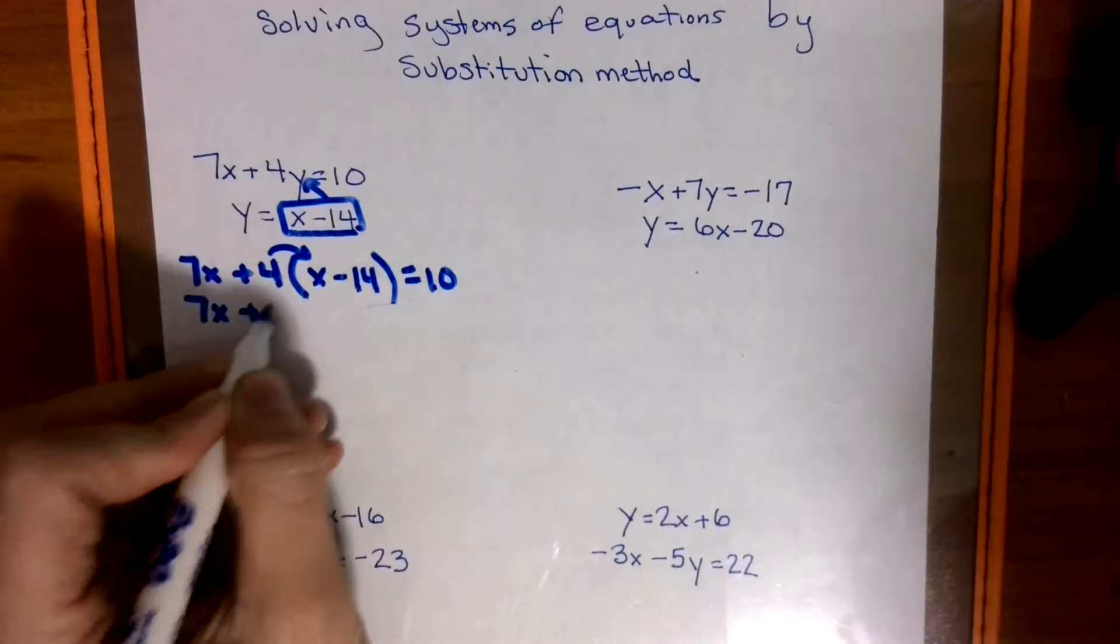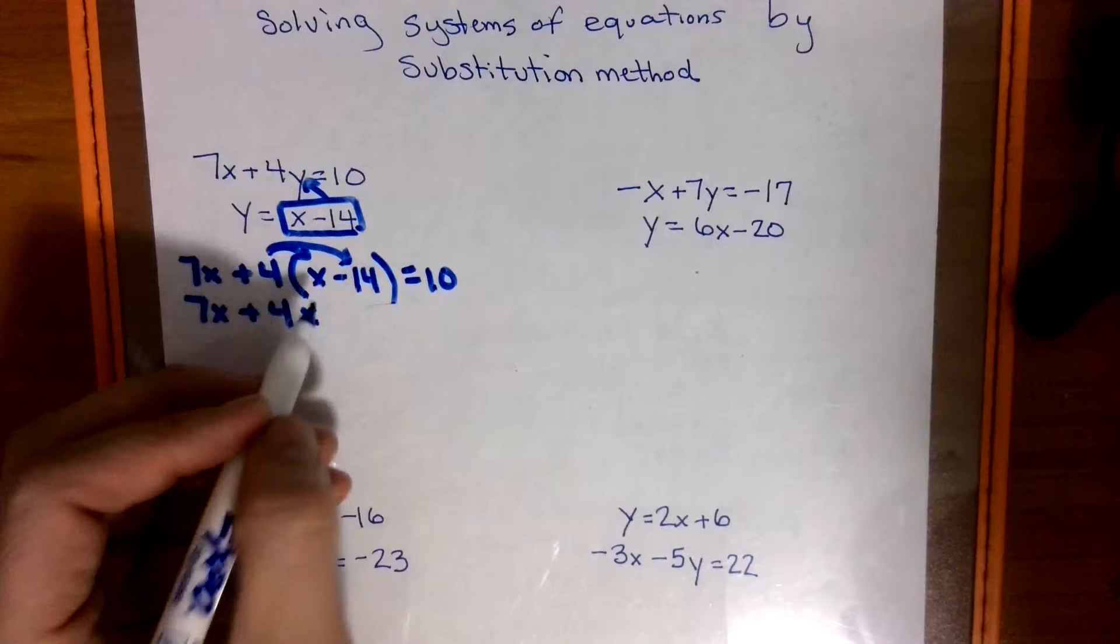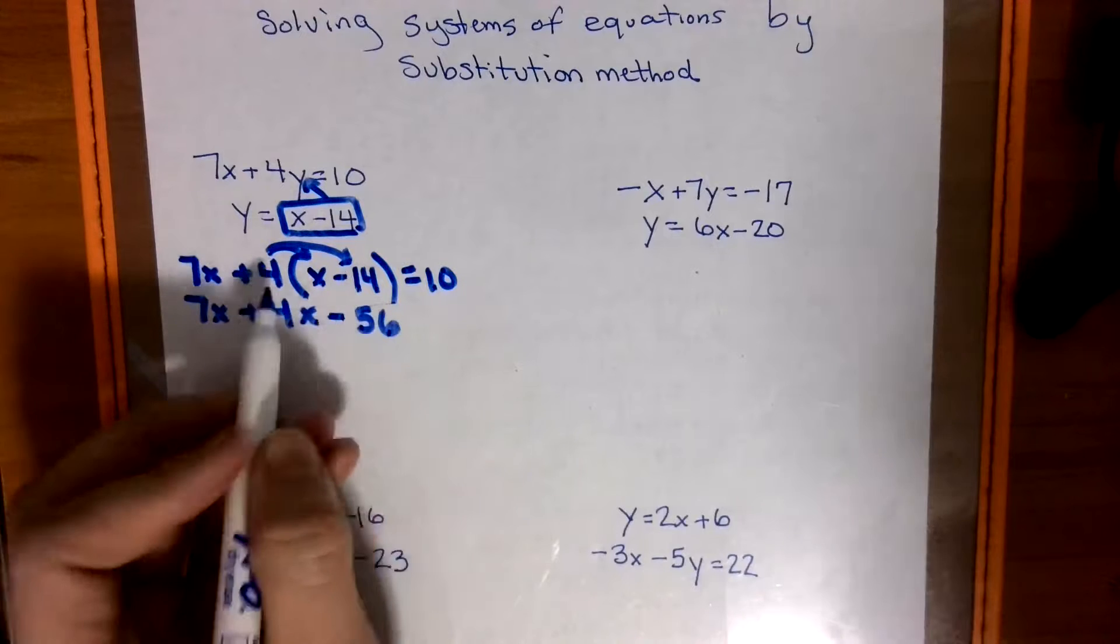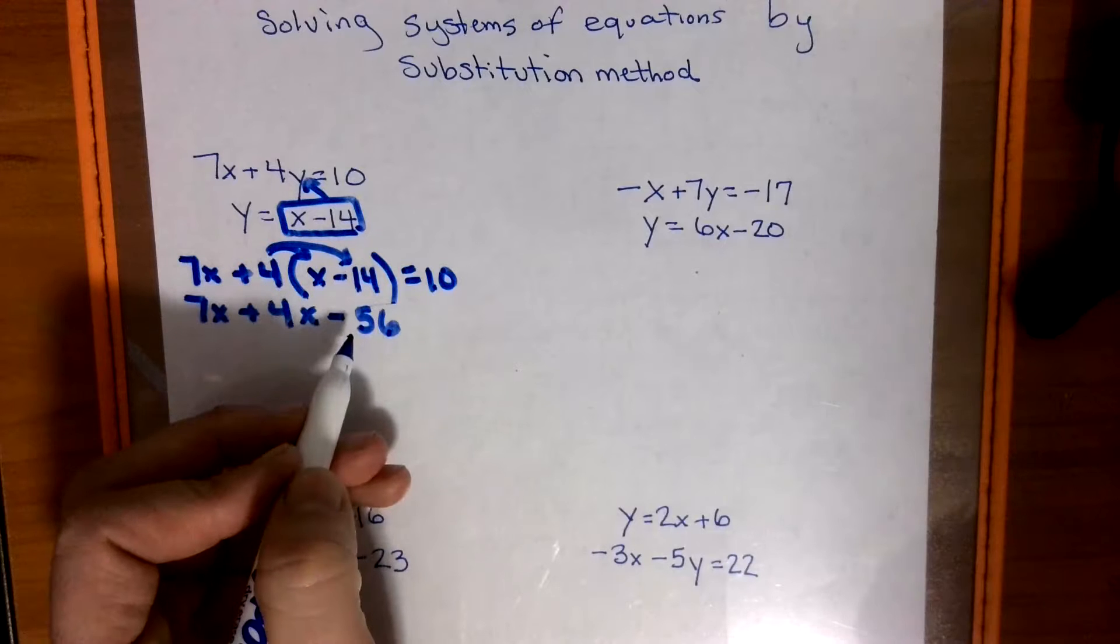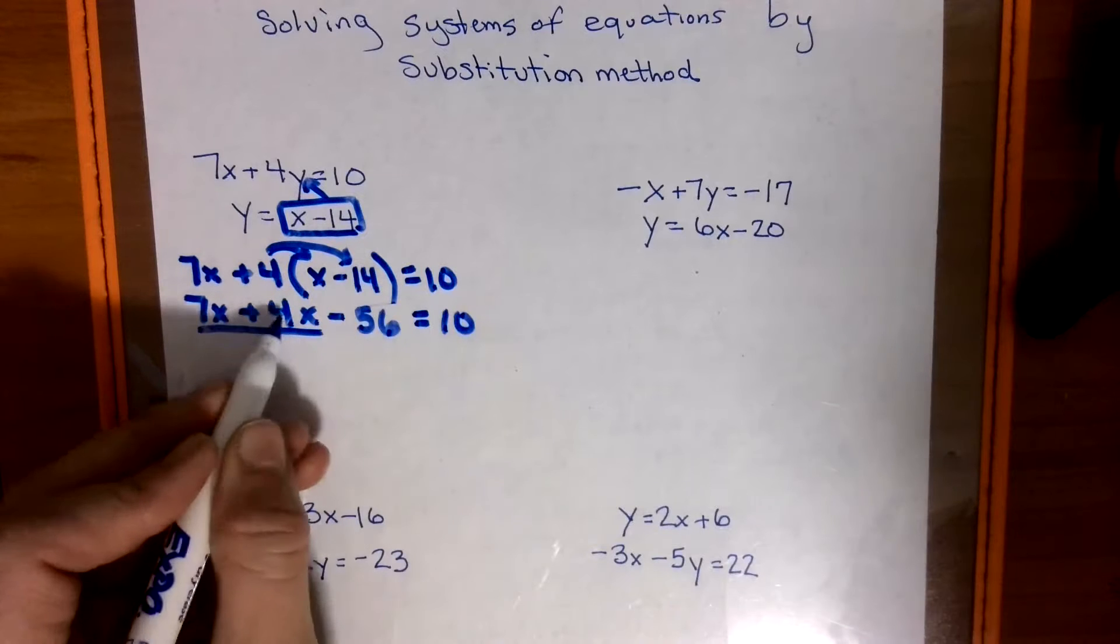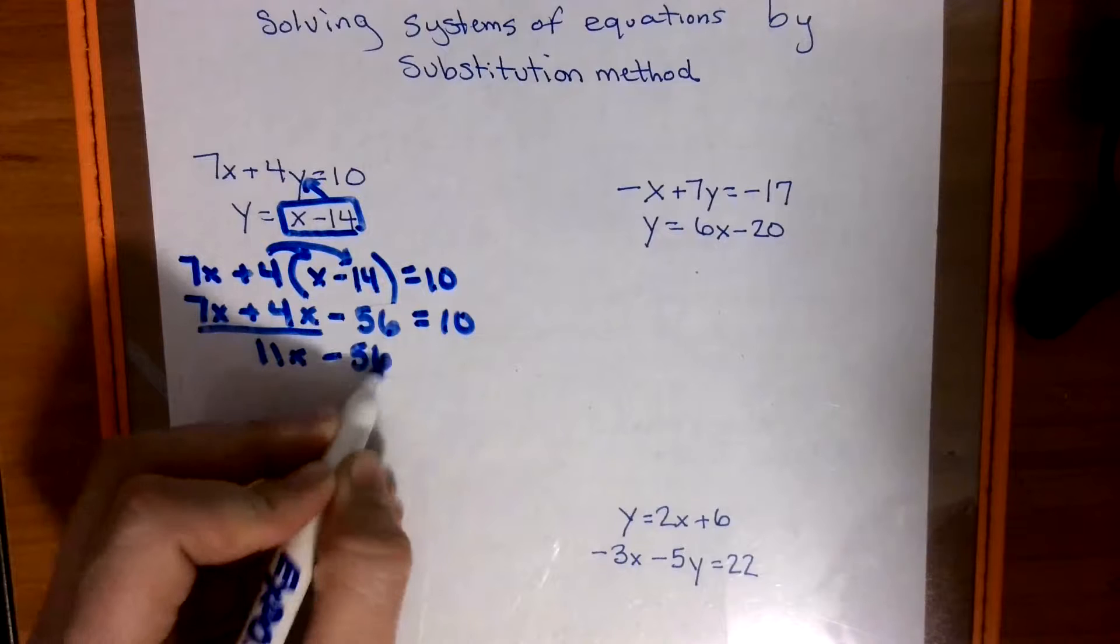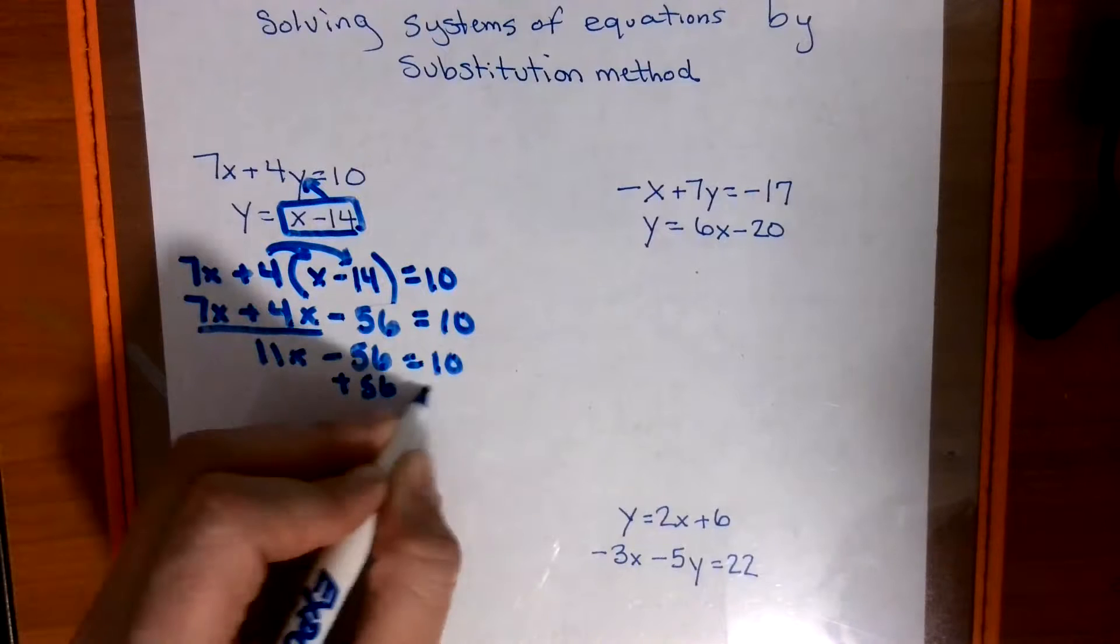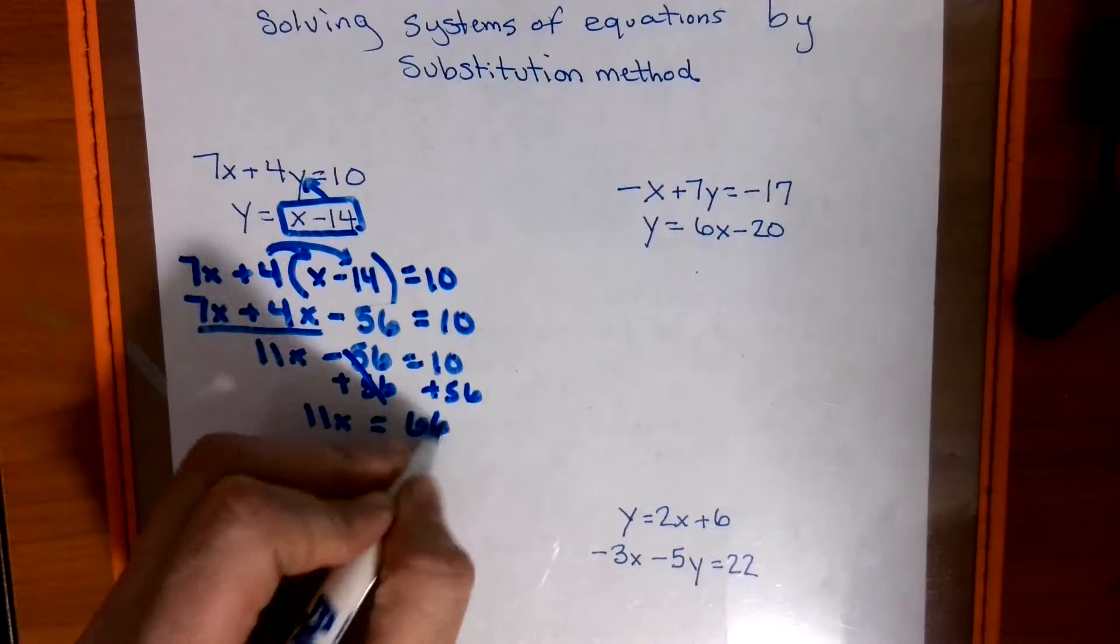So I'm going to have my 7x plus my 4x. And I have to give my 4 to my 14, which is 56. We're going to be a negative 56 because positive 4 times negative 14 is negative 56, equaling 10. We can combine these like terms. So 7, 8, 9, 10, 11x minus 56 equals 10, plus the 56, plus the 56.